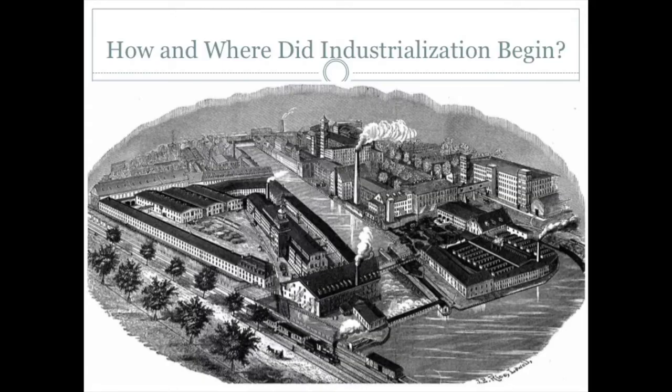Under Thomas Jefferson's democracy, he did not want industrialization to happen. However, industrialization was going to happen because it was happening throughout the world. How it happened, where it happened, and where it began in the United States are questions we will be answering now.